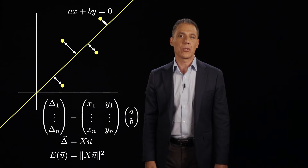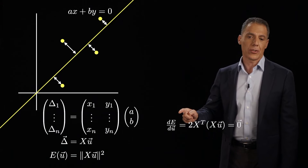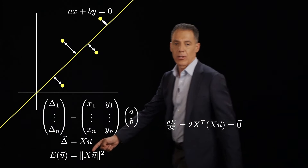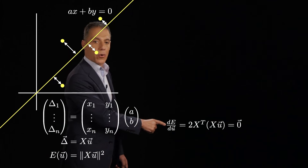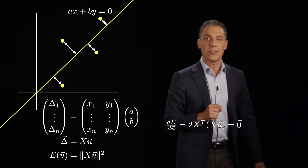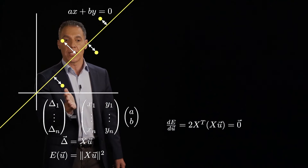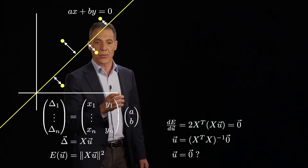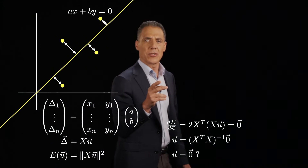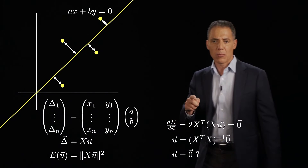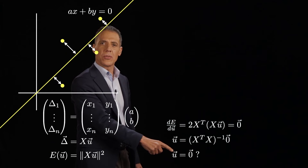We want to compute the derivative with respect to U. The derivative of the error with respect to U: the 2 comes out, we get X transpose up front — same as before — times XU, and that equals zero. That looks familiar; I just don't have a minus Y term. Getting rid of the 2 since there's zero on both sides, I have X transpose X times U. Multiplying both sides by the inverse of X transpose X, which is a two-by-two matrix, I get U equals zero.